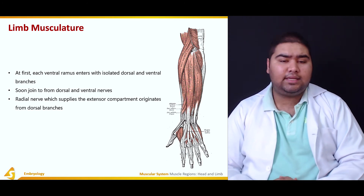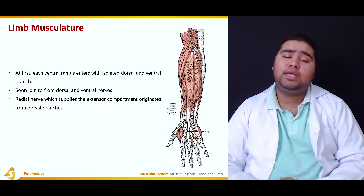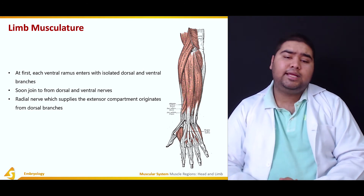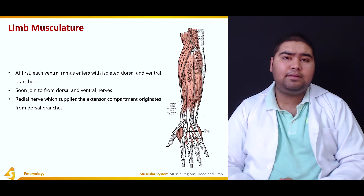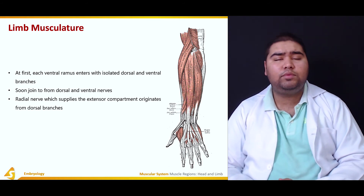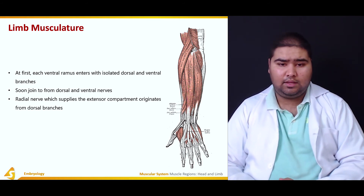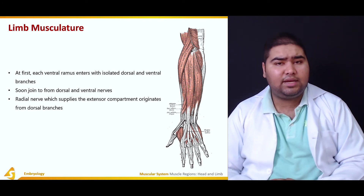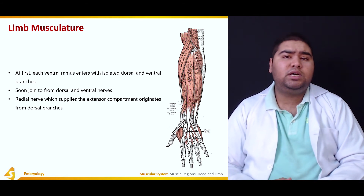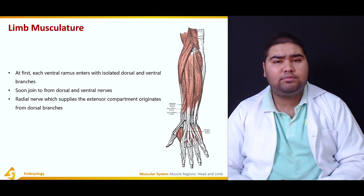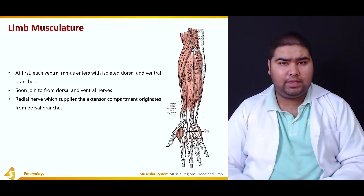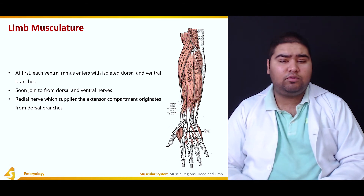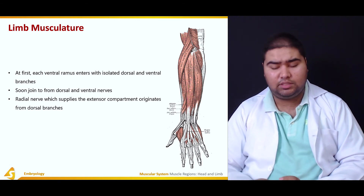The radial nerve is a very important nerve of the upper limb. It supplies the extensor compartment and originates from the dorsal branches only.